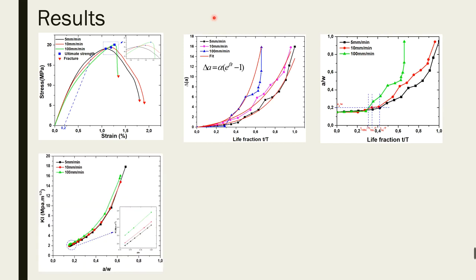And then, the critical stress intensity factor remains constant at 2.6, indicating that crosshead speed has no impact on material toughness.